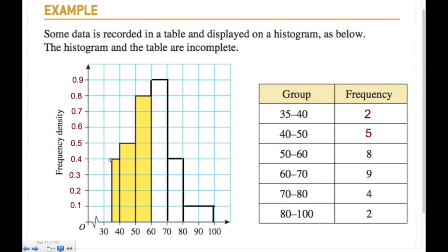For the first small bar, 5 times 0.4 equals 2, so the frequency is 2. For the 60-to-70 group, frequency is 9, so frequency density is 9 divided by 10 = 0.9. Next: 4 divided by 10 = 0.4, and the last one: 2 divided by 20 = 0.1. Now I can finish off the histogram.